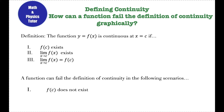The first thing that needs to happen is f of c needs to exist. The second thing that needs to happen is the limit as x approaches c of f of x needs to exist. And the third thing is that the limit as x approaches c of f of x needs to equal f of c — the limit has to equal where the function is defined at that x value.